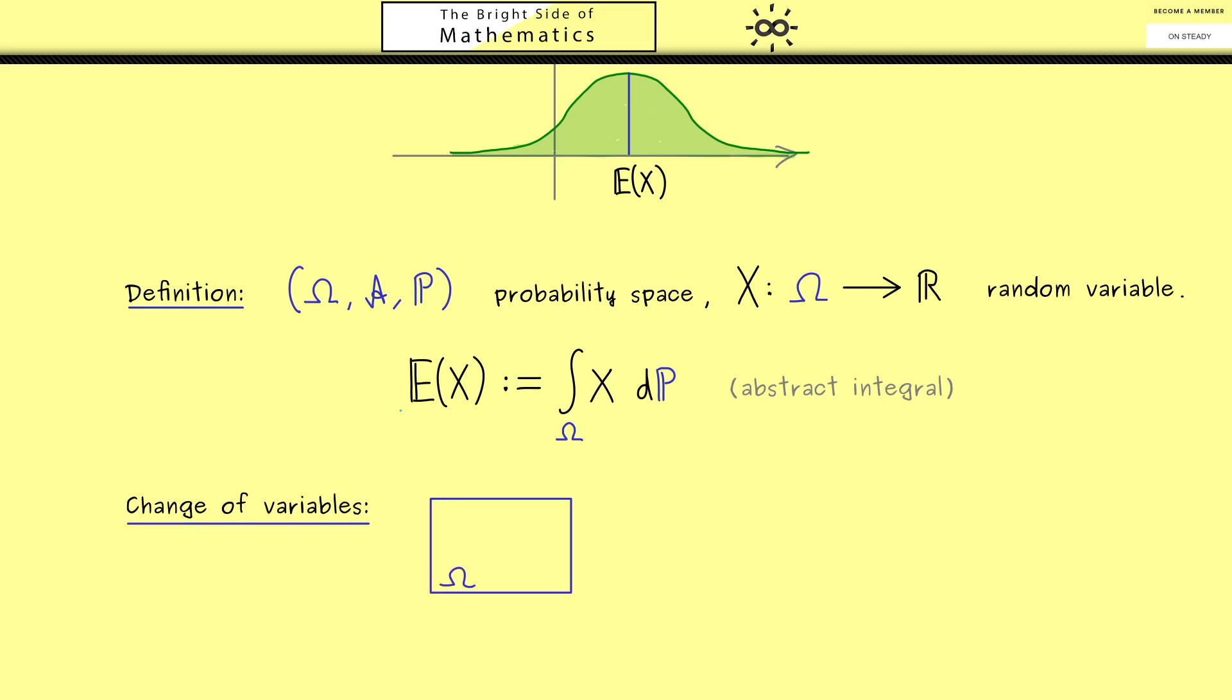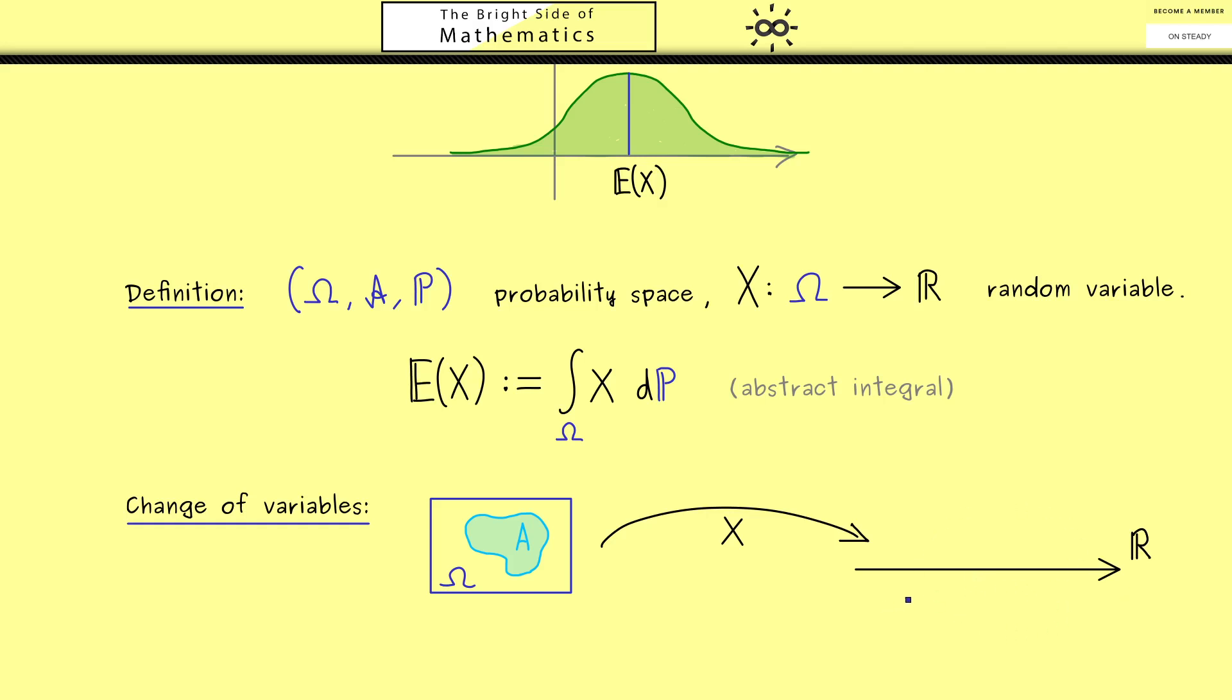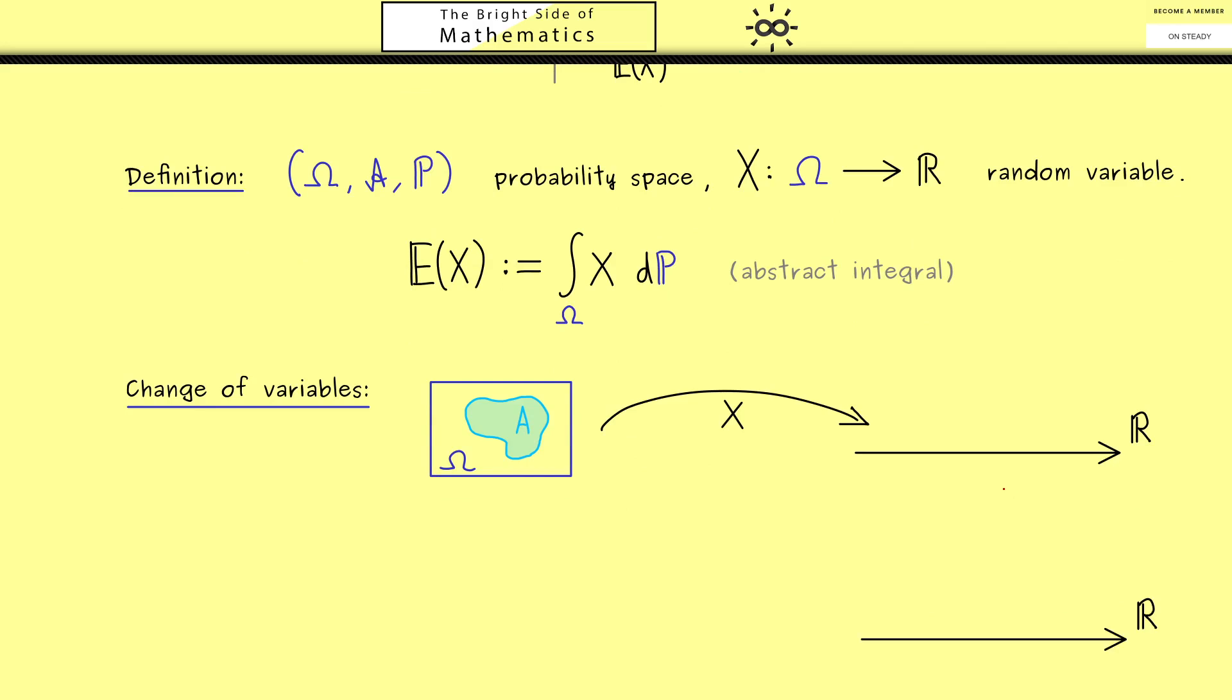This here should be our space Ω, and inside we find a measurable set A. Surely this A should be an element of the sigma algebra A. Our random variable X maps from Ω into ℝ, so the values of X lie on the real number line. However, we could have an ordinary function from ℝ to ℝ, and this function here should get the name g. For example, this could be the quadratic function that sends the variable to the variable squared. Exactly this example we will use a lot.